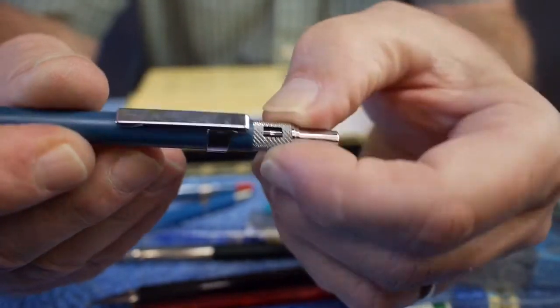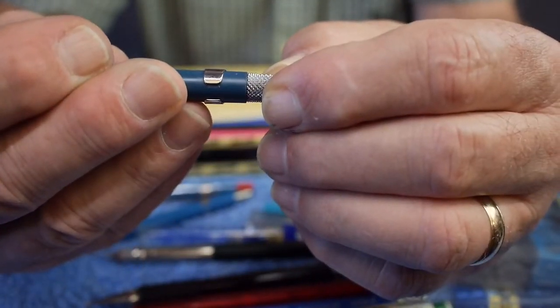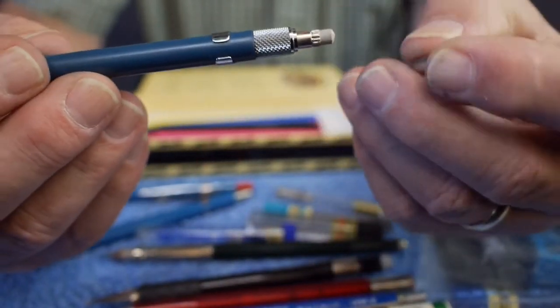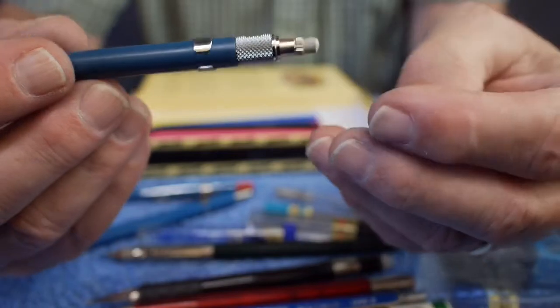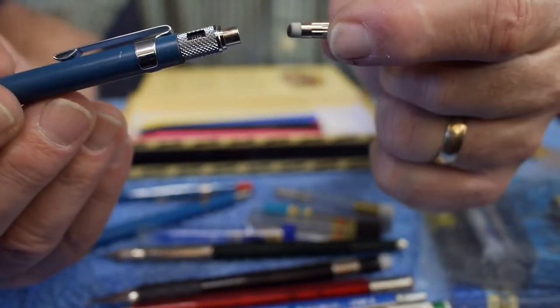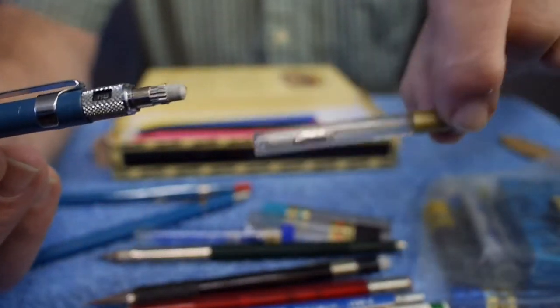It has this adjustable window for the different kinds of leads you're using. It's currently set to HB. But you can set it to F and 2H and all the others. It has that really cool feature where you can set the hardness of it. And you know what? I said this is Faber-Castell. I take it back. This is actually Pentel. And I can tell by the eraser. It's a Pentel style eraser. The same kind as this.